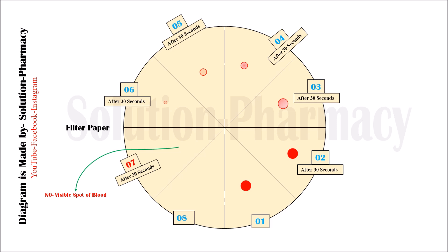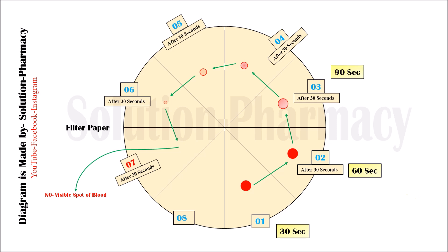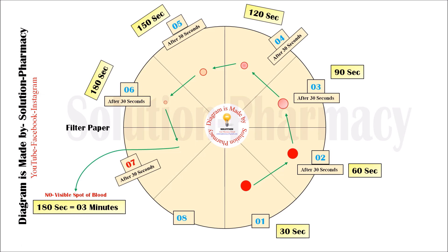Next, we calculate the bleeding time. Count the number of blood spots on the filter paper from the first section to the sixth section — a total of 6 blood spots appear after every 30 seconds, while the seventh section shows no blood spot. The first spot is at 30 seconds, the second at 60 seconds, and so on up to the sixth spot at 180 seconds — meaning the bleeding time is 3 minutes. Simply, multiply the number of spots by 30 seconds: 6 × 30 = 180 seconds = 3 minutes. This is how we determine the bleeding time of any person.